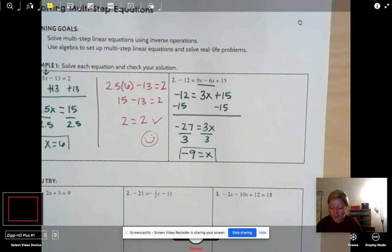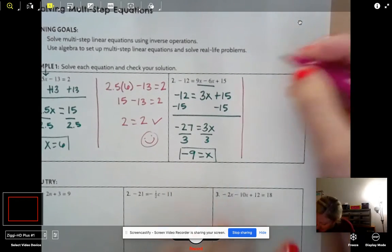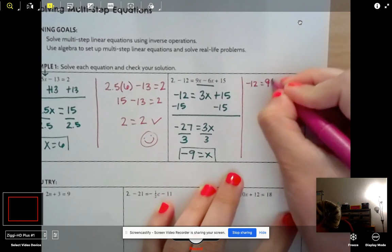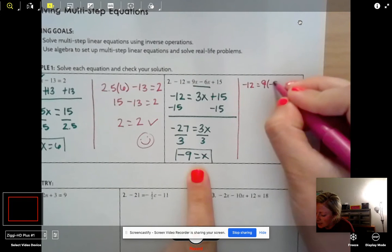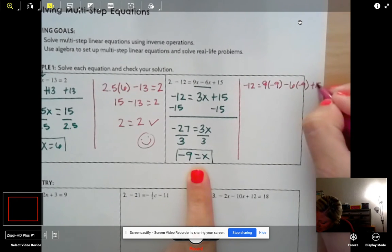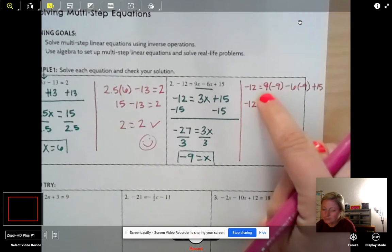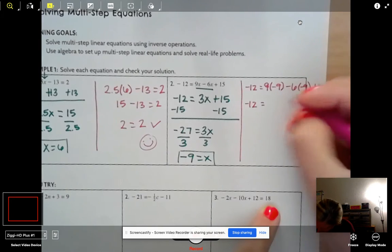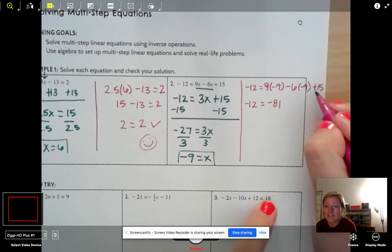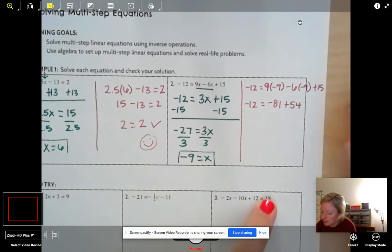And I just want to show you that you can check this one as well. So if we plug in negative 9 every time we see an x, we're going to have negative 12 equals negative, I lied, positive 9 first. In parentheses is our negative 9 minus 6 times negative 9 plus 15. Drop down your negative 12. We can't do anything to it. 9 times negative 9 is negative 81. Negative 6 times negative 9 is positive 54 plus 15.